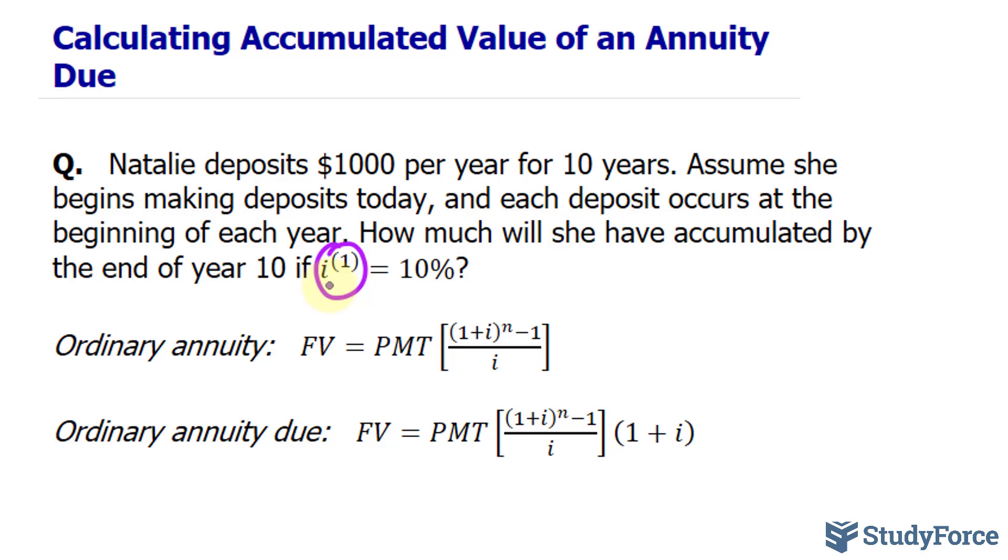If these deposits were being made at the end of each period, we would use the ordinary annuity formula. That's something we're used to using, where the future value of the account is equal to the payments that you're making at the end of each period. And within the brackets, you have (1 + i)^n - 1 over i.